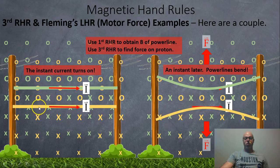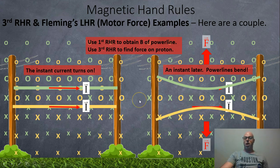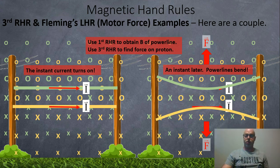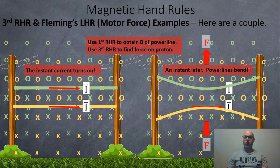The first right-hand rule was used to find the X's and O's for both power lines. Now we're going to use the third right-hand rule to figure out how the power lines are going to bend. The green line is experiencing gold O's, so your fingers should be pointing towards you, your thumb is to the right, and your palm is facing downwards — so the green power line will be bent down.